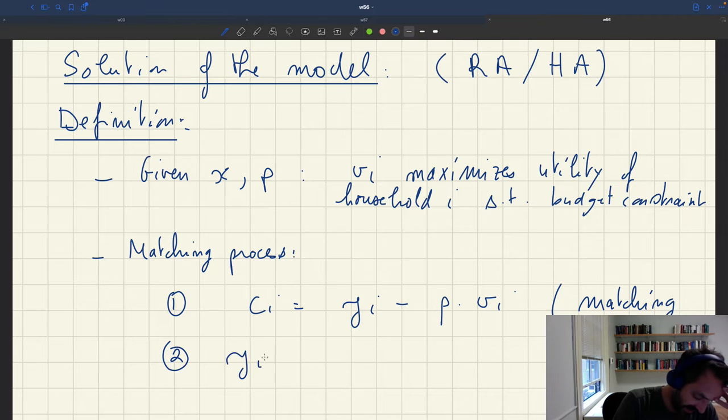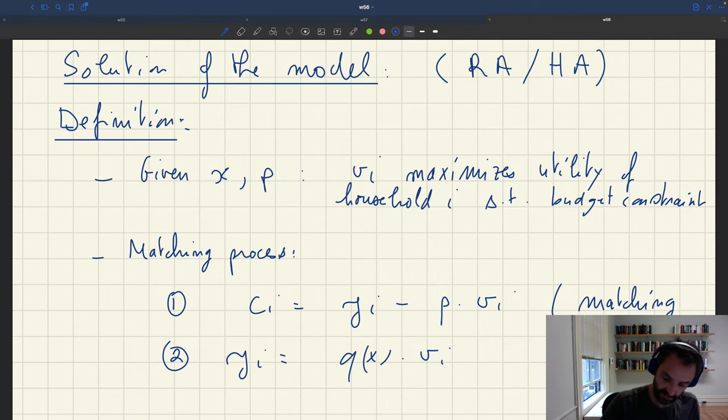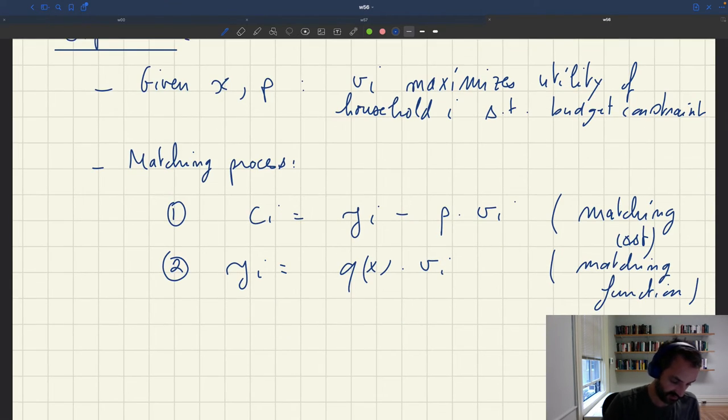And two, yi, the amount of services that household i purchases, is q of x times vi. So this is because of the matching function. So now we have vi, ci, yi.